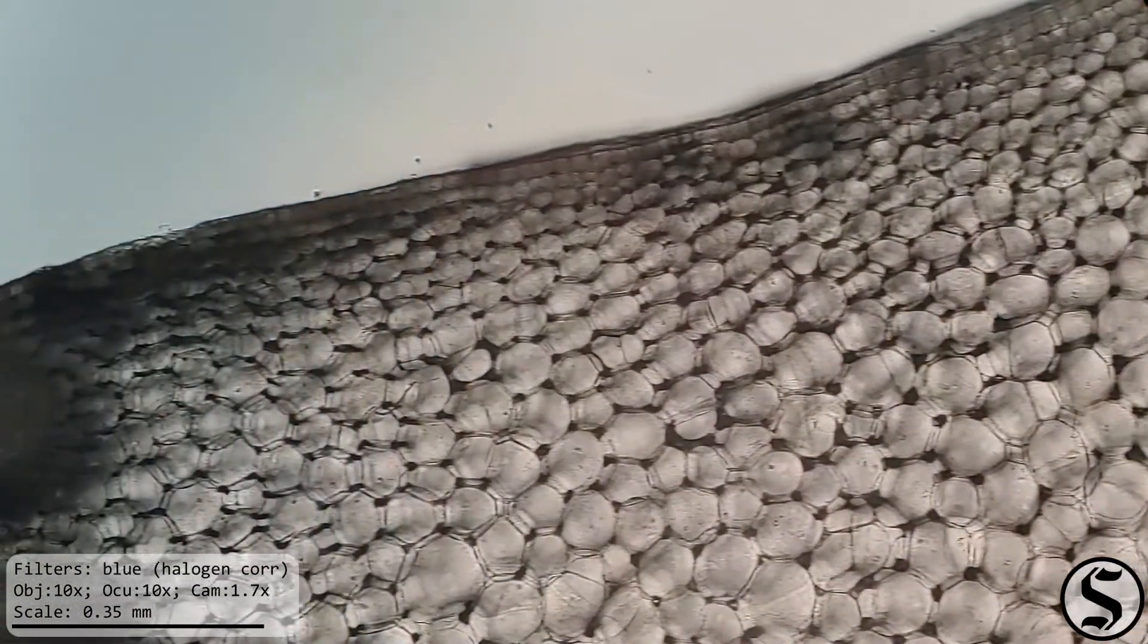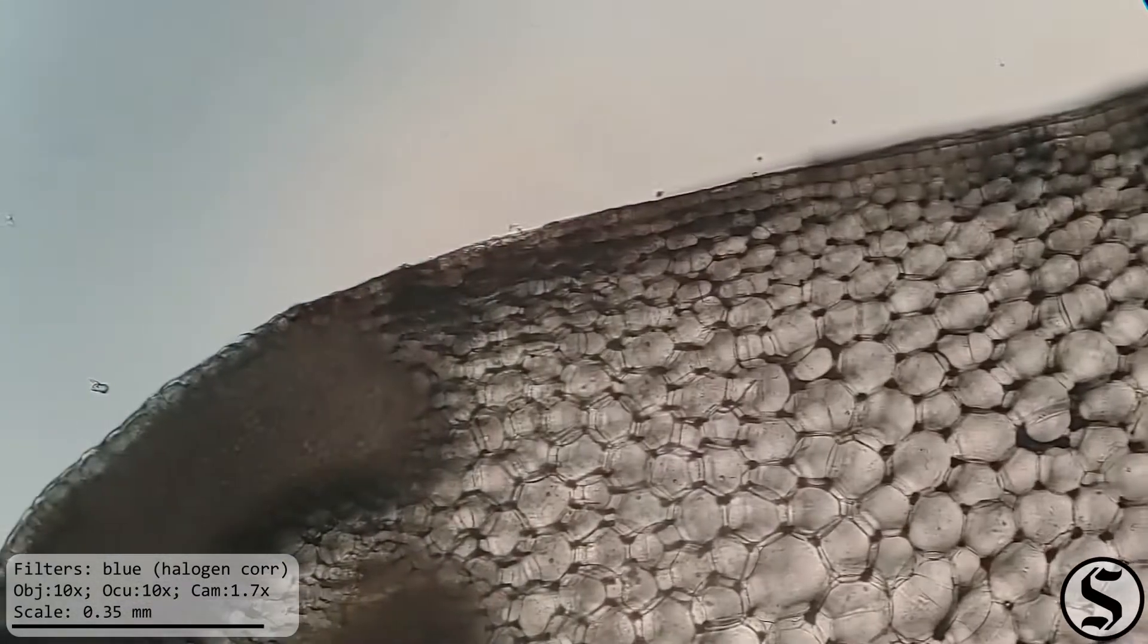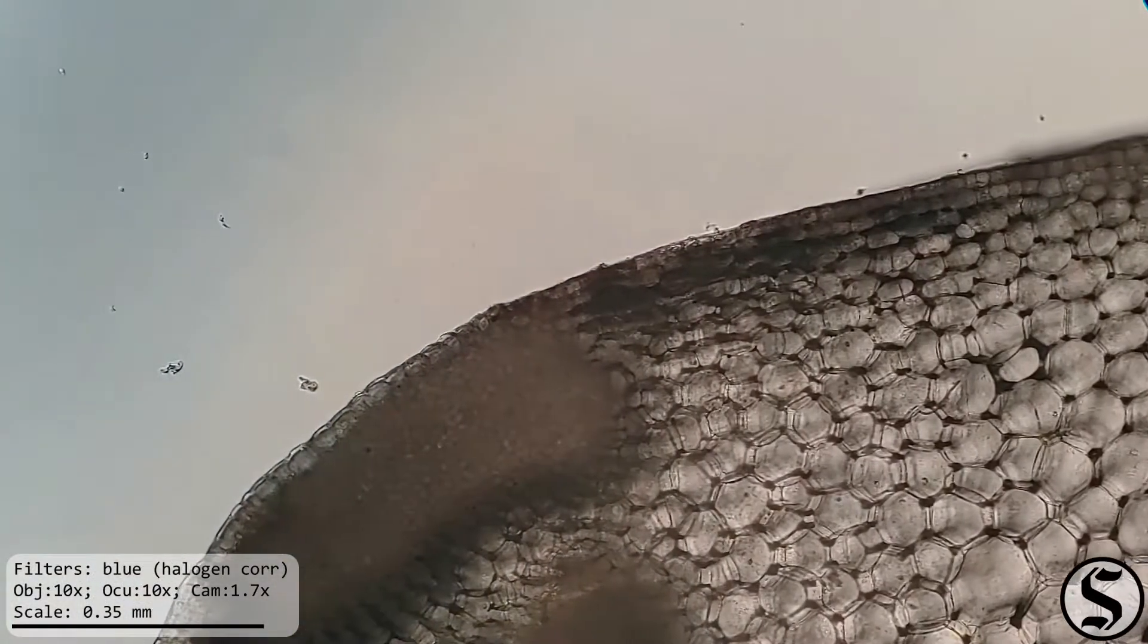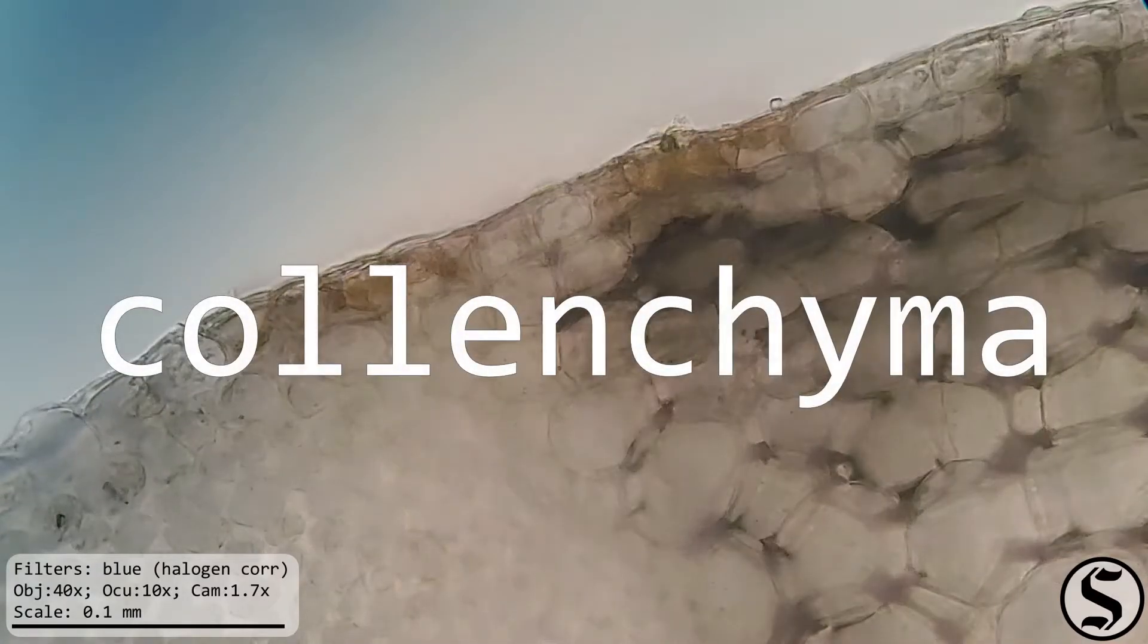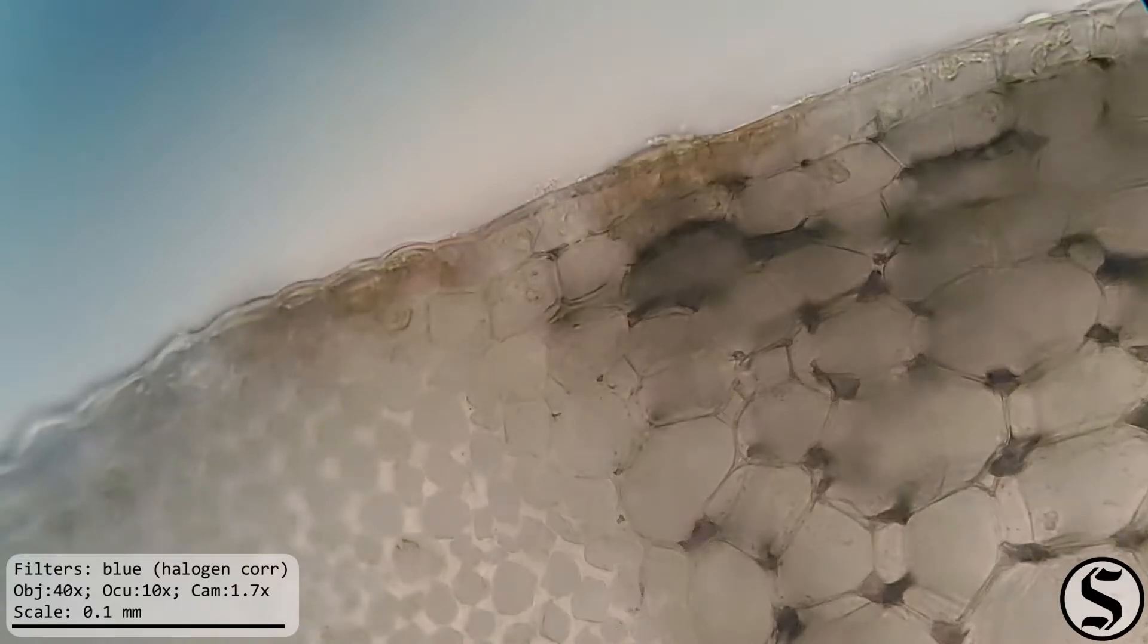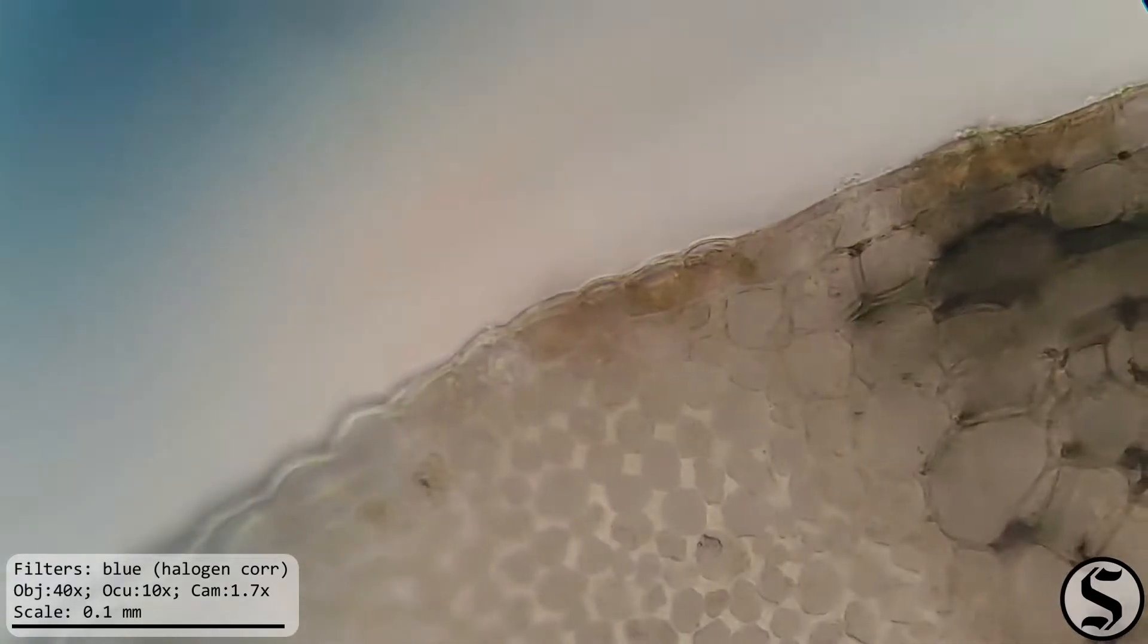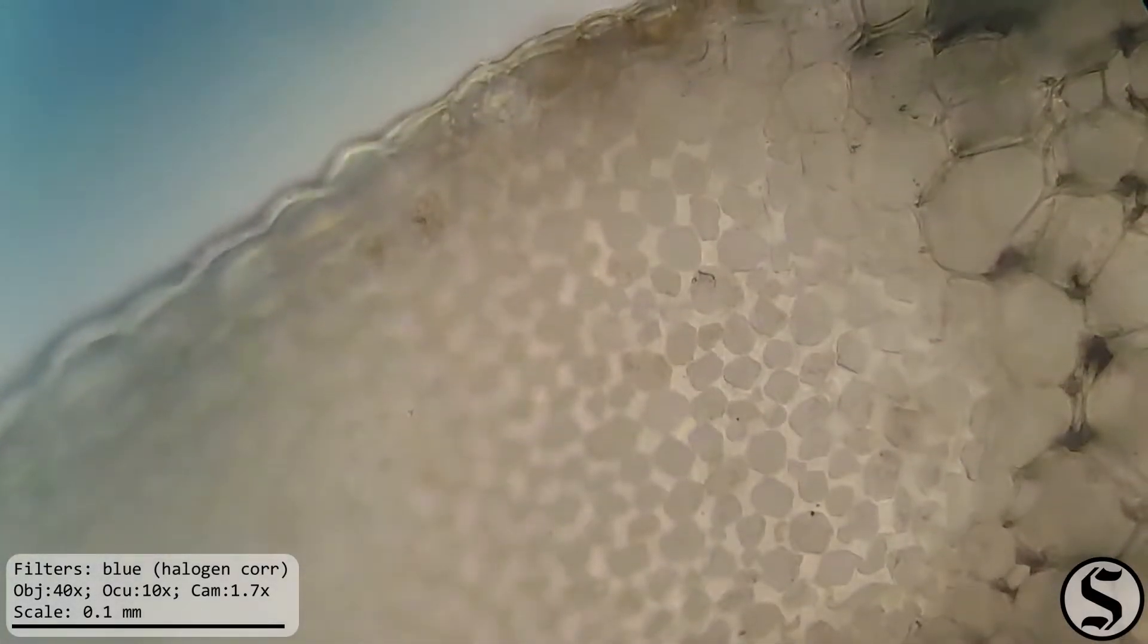And as we go along the celery we can see there's a distinct region of different cells there and that is the collenchyma from Greek kola glue and enchyma filling. And that's the structural support for the celery. That's what all those ridges are along the outside.